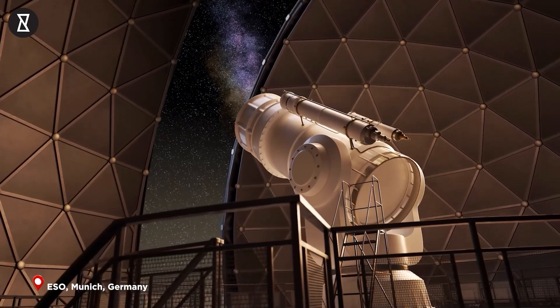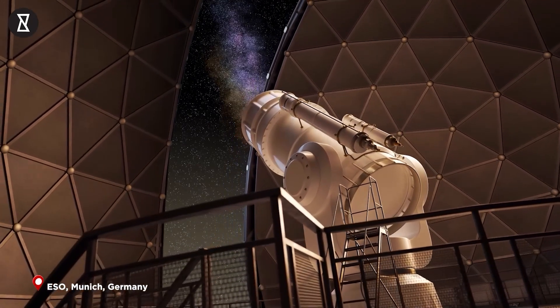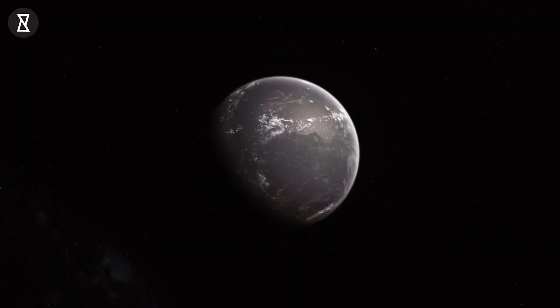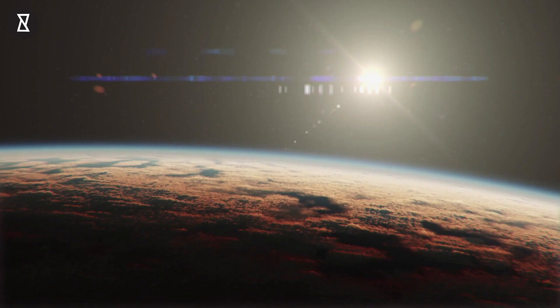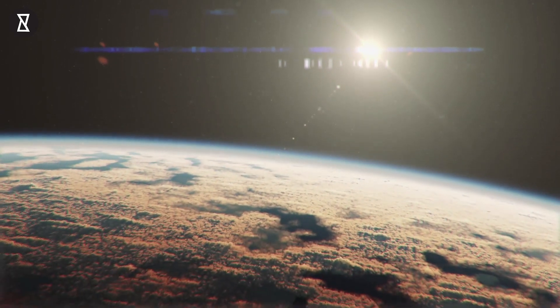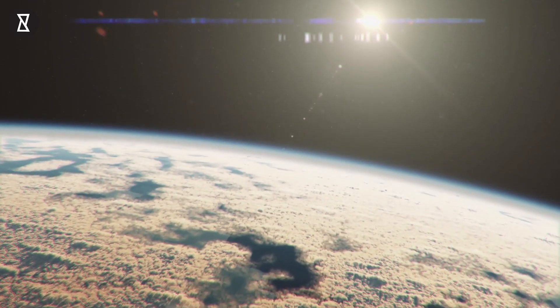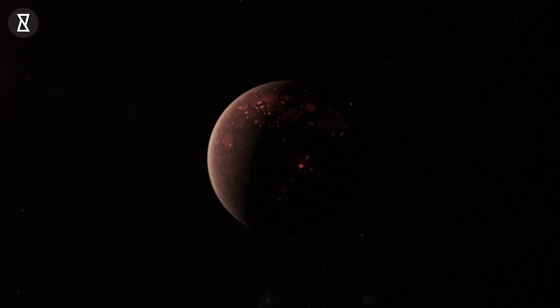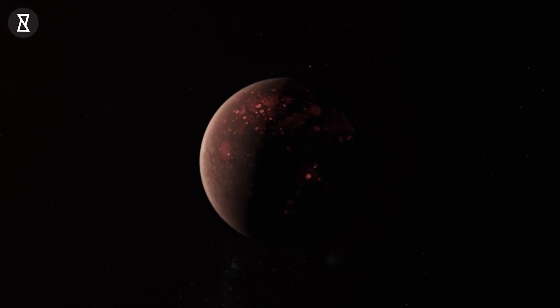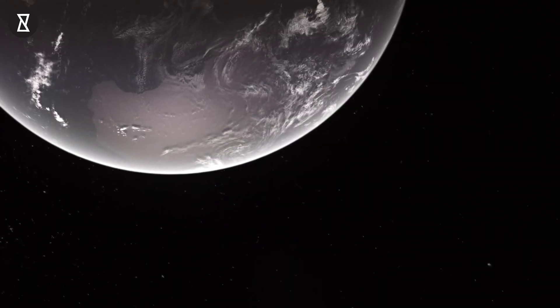Discovered in 2016 by the European Space Observatory, Proxima b, one of the three planets of Proxima Centauri star system, orbits its star every 11.2 Earth days. In fact, Proxima b lies in the habitable zone of the star system, which means it could contain liquid water.